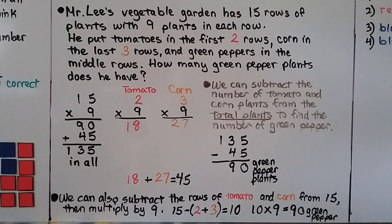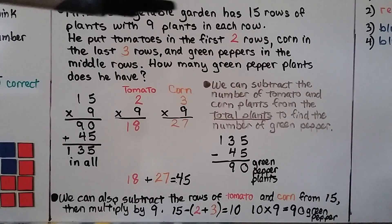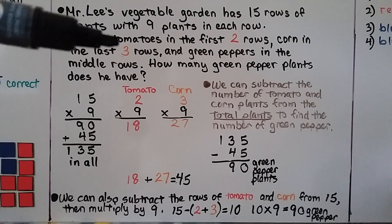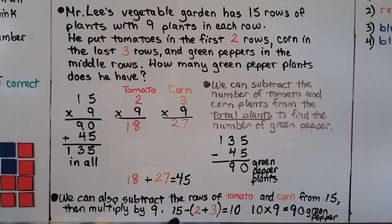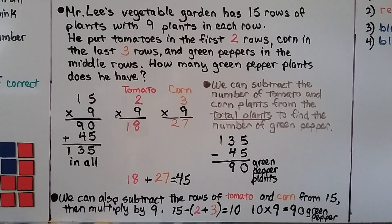There's usually more than one way to solve a problem. We can also subtract the rows of tomato and corn from the fifteen rows. There are two rows of tomato, three rows of corn, and fifteen rows in all. Fifteen rows minus the rows of tomato and corn gives us ten rows. If there are nine in each row, ten times nine is equal to ninety green peppers — the same answer we got the first way.